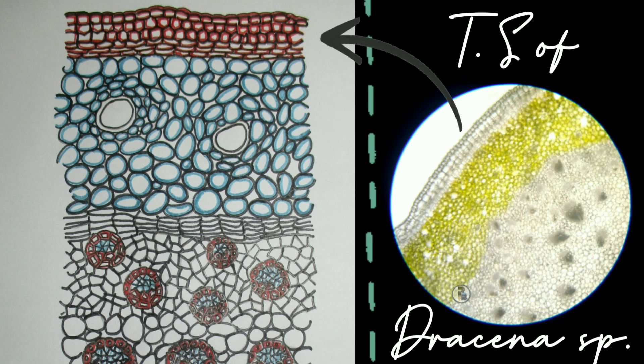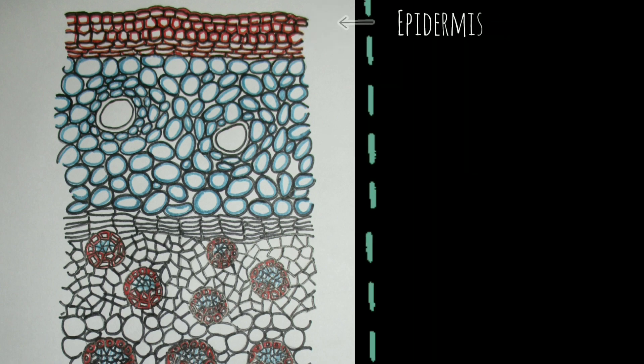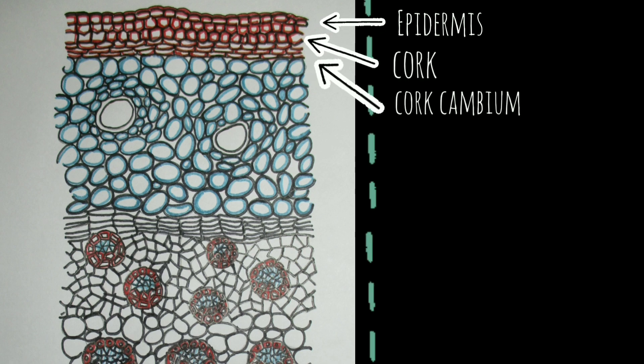However, some monocotyledons belonging to the family Liliaceae, like this sample dracaena, exhibit a peculiar type of secondary growth due to the formation of a cambial layer in the sub-epidermal region and also just outside the vascular bundles.